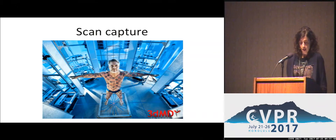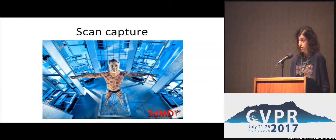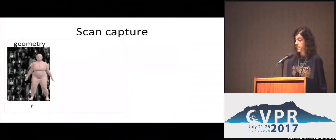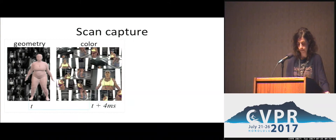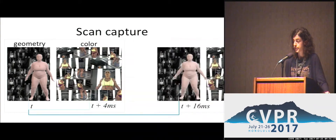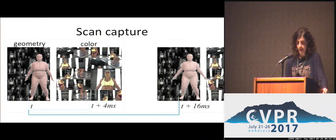So how did we build the dataset? We consider the same sequences as in Dyna. They were captured with a multi-camera active stereo system, which gives us textured 3D full-body scans at 60 frames per second. The capture of color and geometry is not synchronous. Given a frame at time t, we first have 22 pairs of stereo cameras shooting to capture geometry. To avoid interference with the speckled pattern projected in this stage, we have 22 color cameras shooting with a delay of 4 milliseconds, and the cycle repeats every 16 milliseconds. Dyna performances were captured after applying a high-frequency texture pattern on the skin of the subject, which is well visible here.